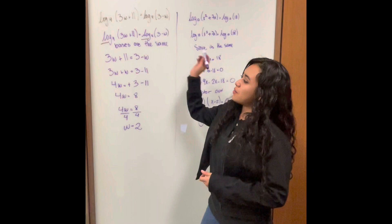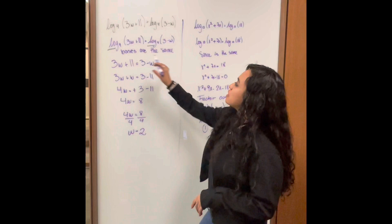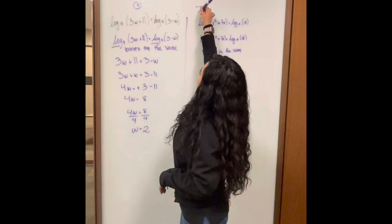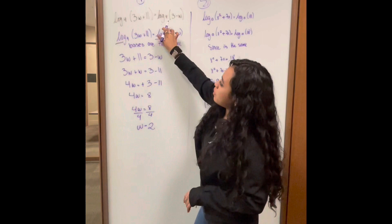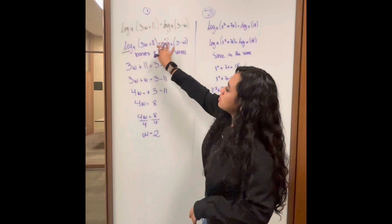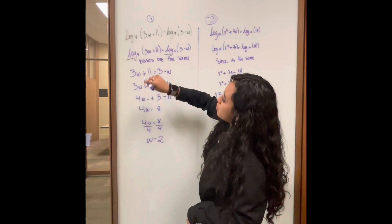Now we're going to continue with the next topic, but in a more difficult way. We can see that we've added some logs in here — this is one, and this one is going to be another one. We're going to start with this one. As we can see, there are log base 4 and log base 4. Since the bases are the same, we can put these together and nothing changes since it's the same. So we put this out and then we have just our bases in here.